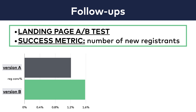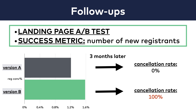Nice job! You release it to your whole audience, the number of registrations indeed goes up. But just in case, three months later, you check out the cancellation rate of the users who have seen version B in your A-B test, and you compare it to the cancellation rate of the version A users. Let's say you see that in version B almost every user cancels their subscription, while in version A everybody sticks with you. Then version B was great in the short term, but in the long term it was a disaster. Of course, this was a very extreme example and something like this never happens in real life, but you get the point. You should always follow up with your experiments.